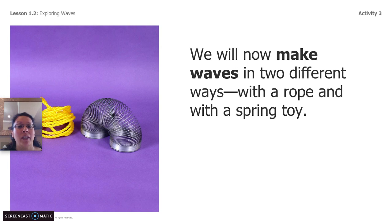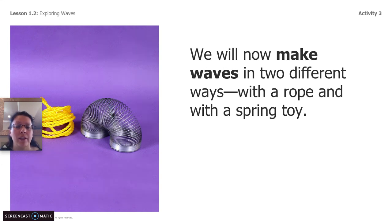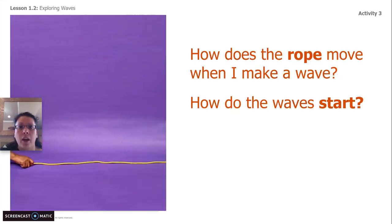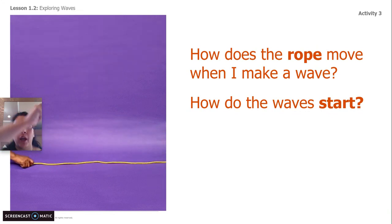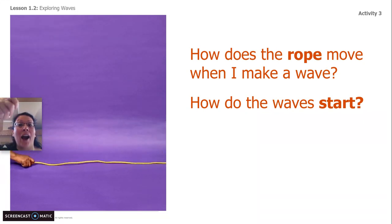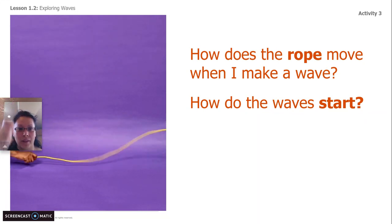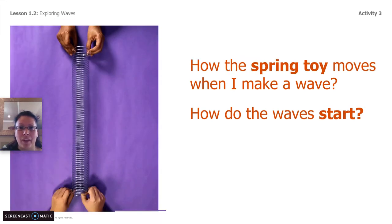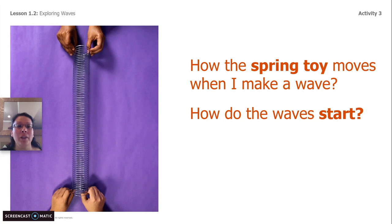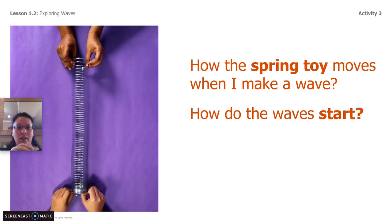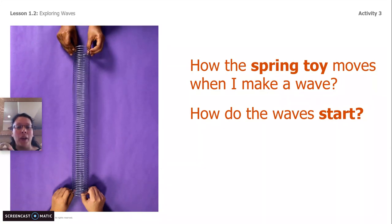We're going to make different waves today in two different ways — one with a rope and one with a spring. If you have a jump rope, a shoelace, or any kind of rope, you can make the wave with me. Or if you have a slinky toy, that would work too. Watch how my hand is moving the rope. How does the rope move when the wave is being made, and how do the waves start? With the spring toy, how does it move when we're making the wave, and where do the waves start?